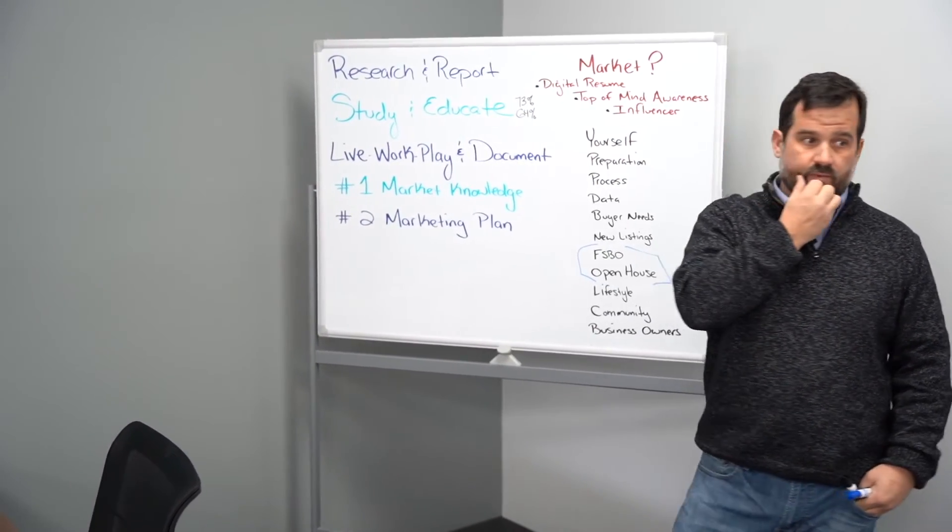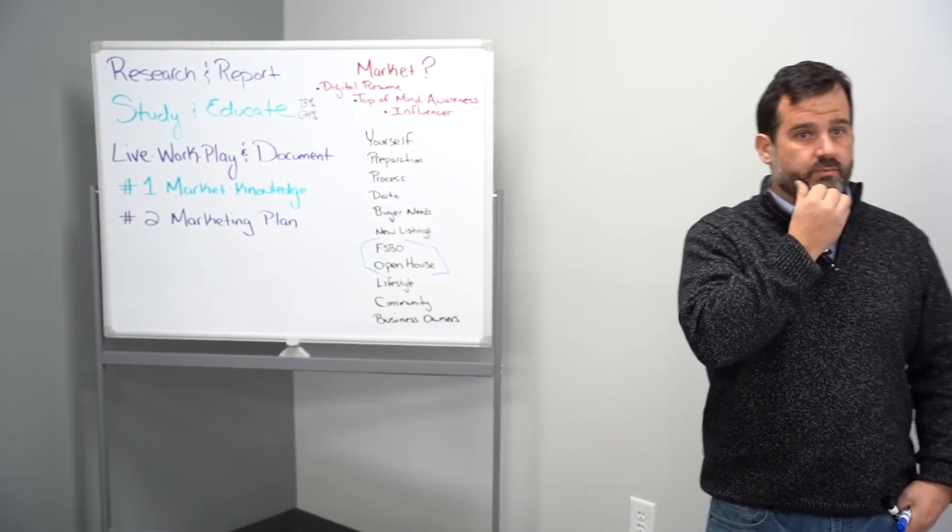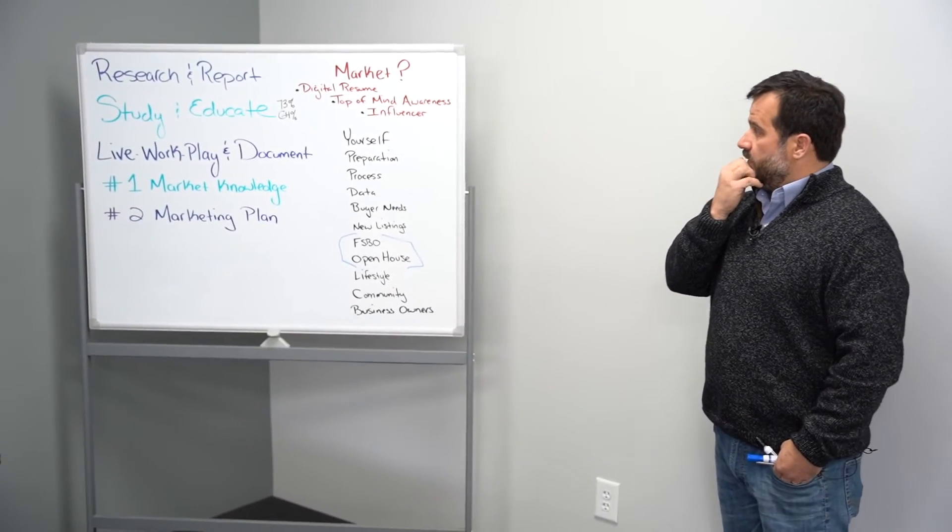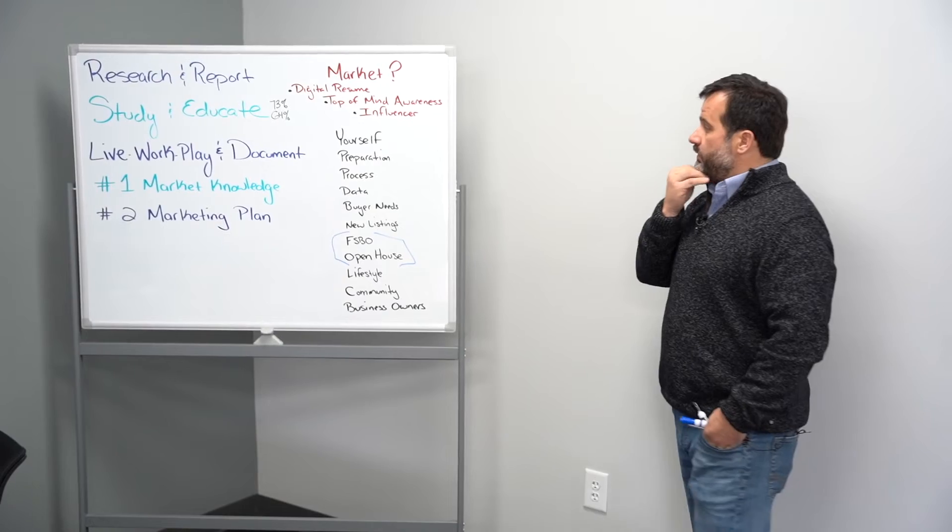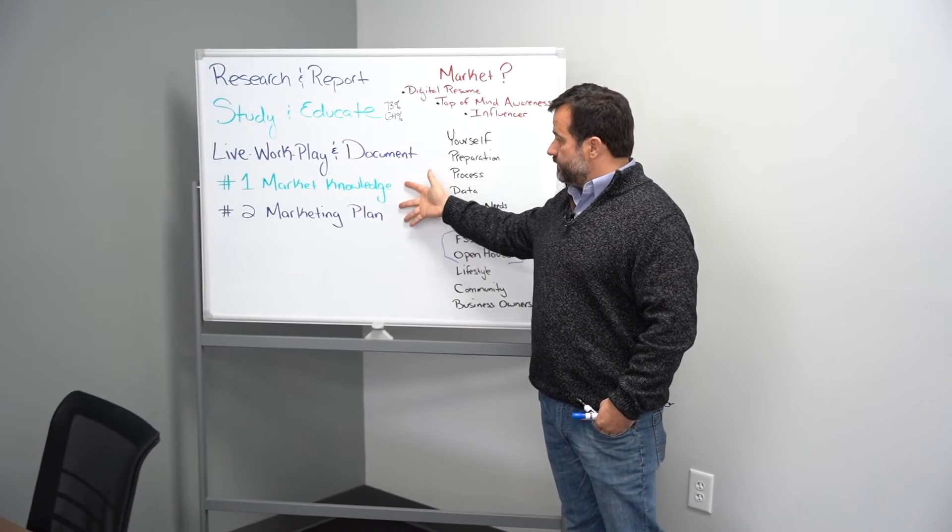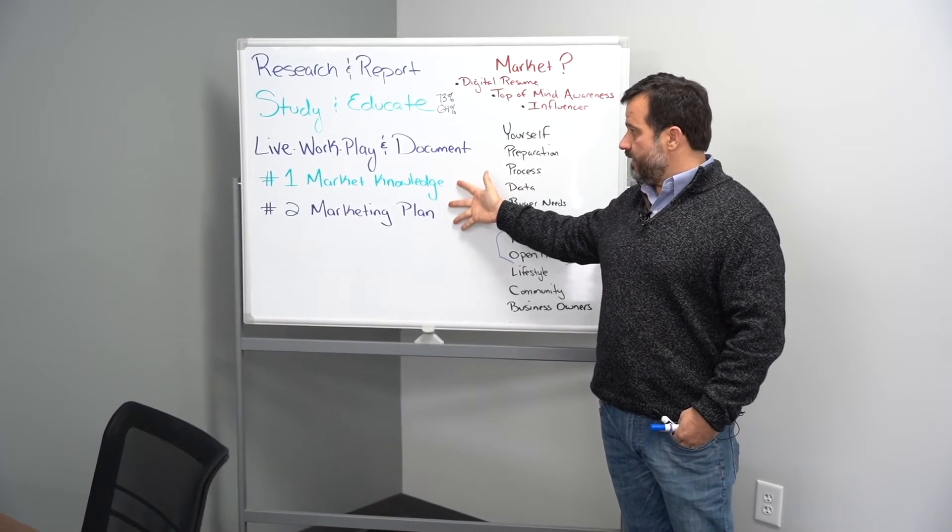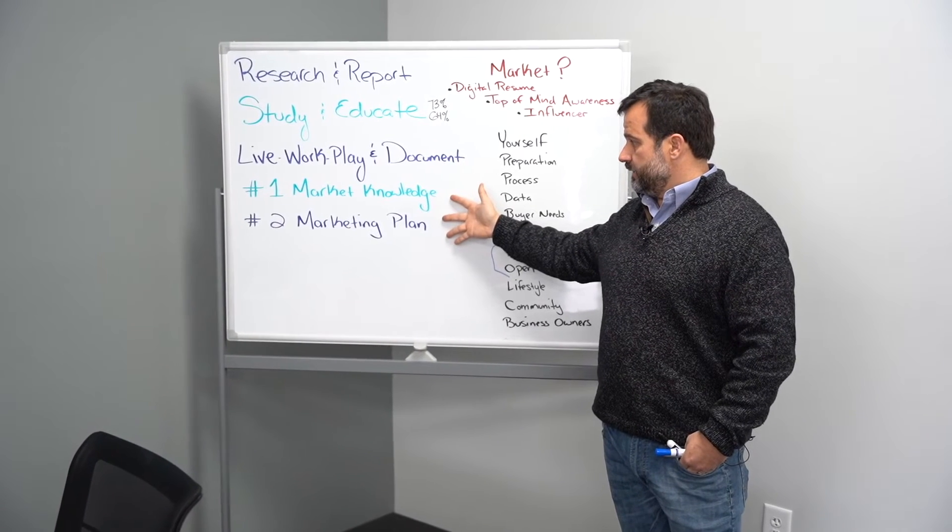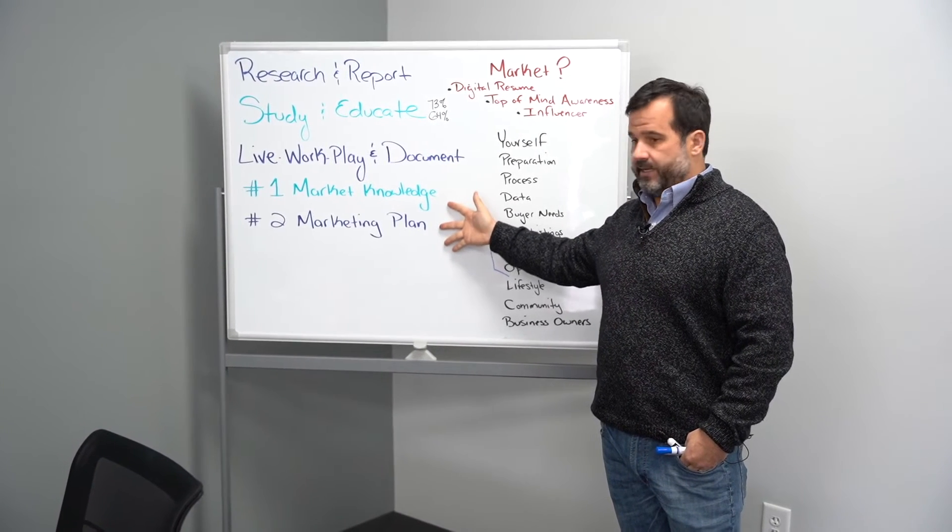What can you research and report? What do people want to know? The number one thing that consumers want in a real estate agent they hire is market knowledge. Number two is a marketing plan.